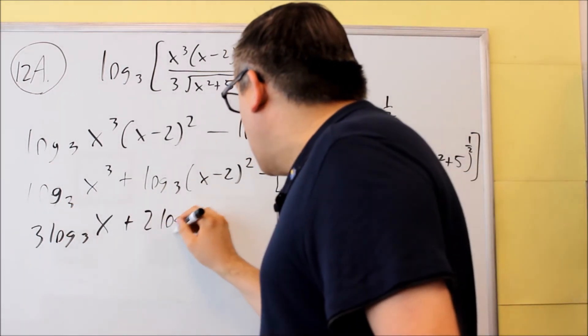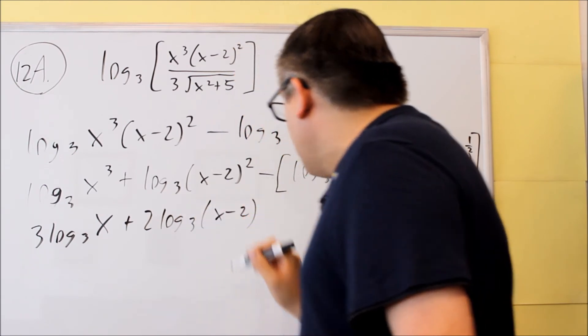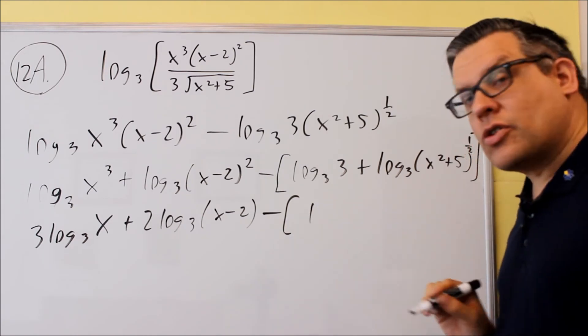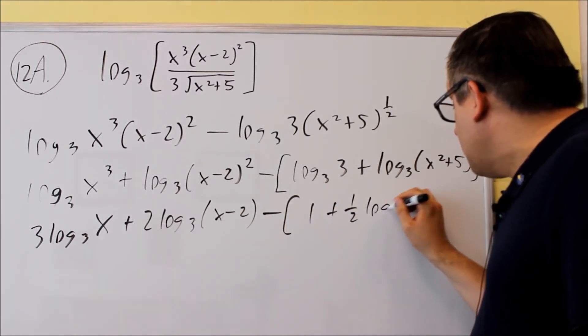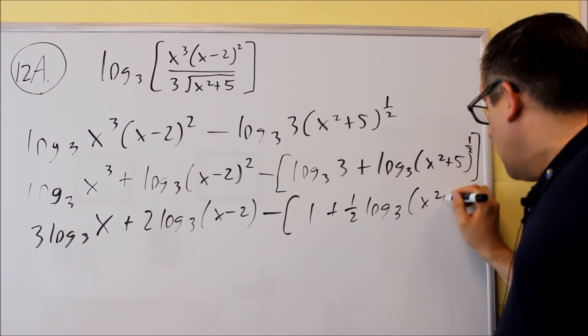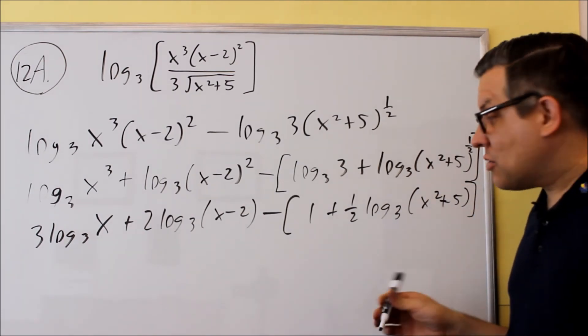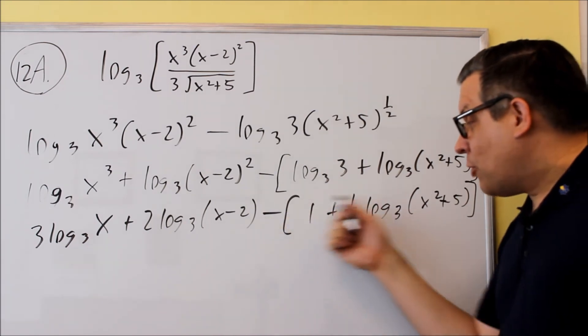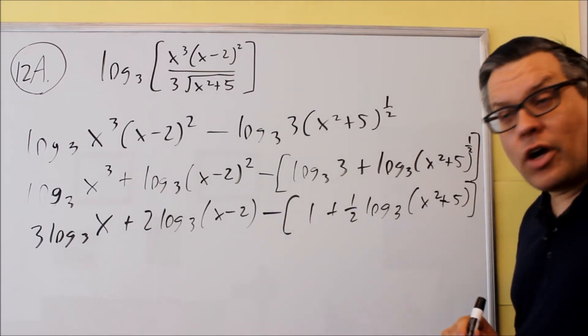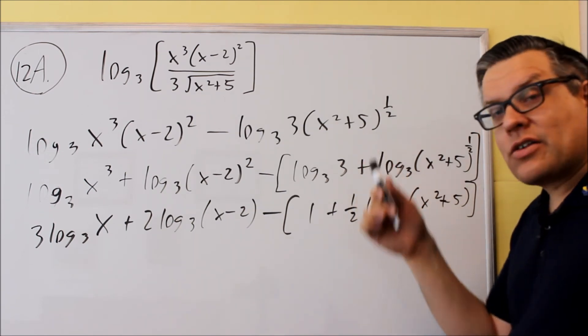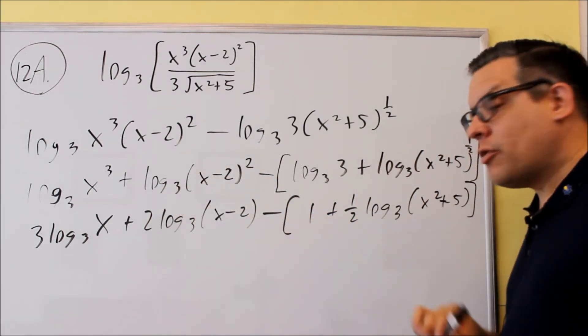Next, 2 comes down, I have log 3 x minus 2. Now, this is where I'm going to evaluate that. Log 3, 3, this one turns into a 1. And then I can bring the 1 half down in front of this one, and I can either leave my answer with the brackets or I could distribute the negative and have both of these negative. It's okay either way. But this is how far you want to take your answer. Make sure you do that last step and bring the powers down in front.